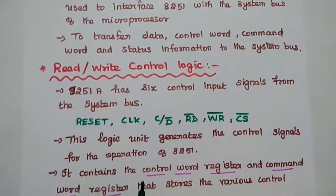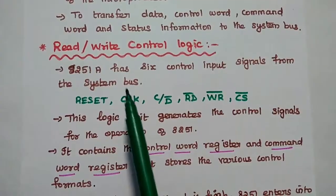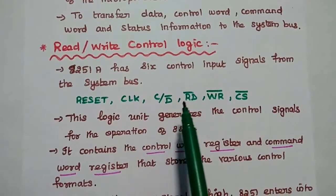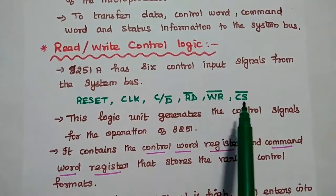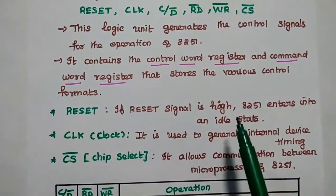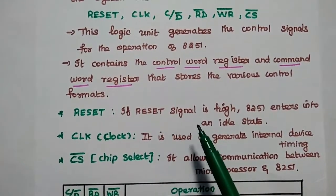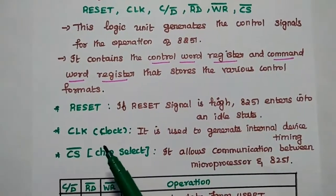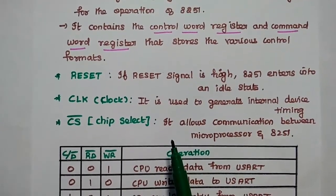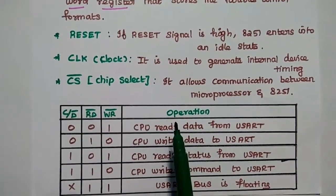The read/write control logic receives 6 control input signals from the system bus (processor): Reset, Clock, C/D bar, Read bar, Write bar, and CS bar. If the reset signal is high, the 8251A enters an idle state — reset is used to reset the USART. The clock signal is used to generate the timing signal. CS bar (chip select) is an active low signal that allows communication between the microprocessor and the 8251A and selects the chip.